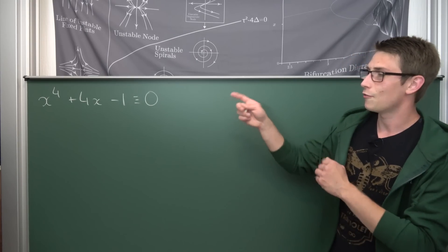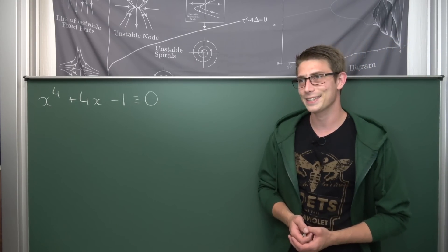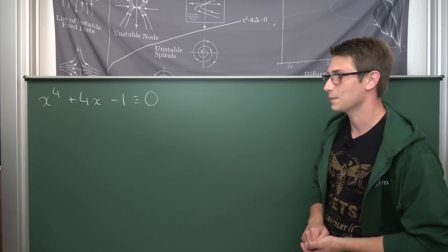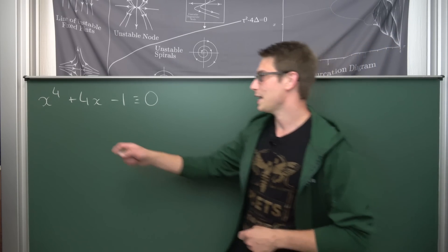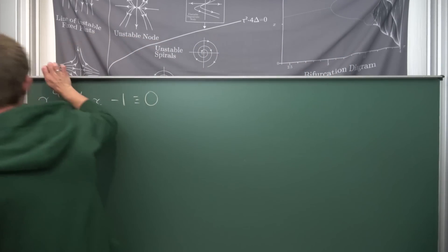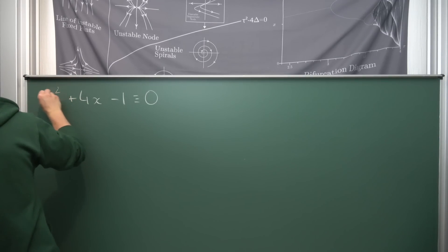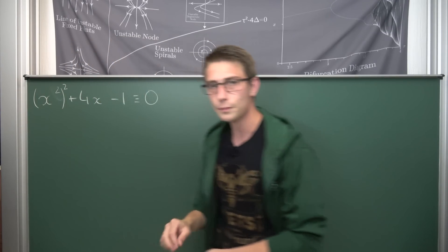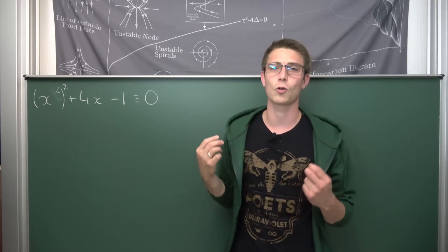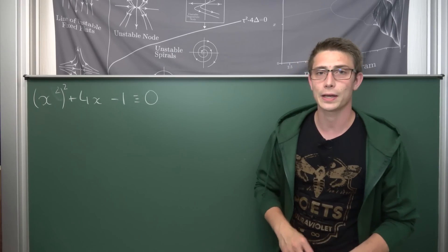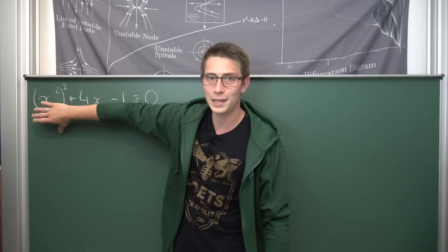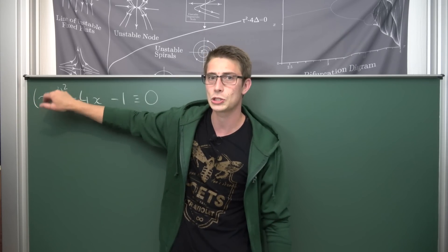We are going to start to factor this polynomial, and it actually involves some very nice rewriting of the original expression. First, I want you to notice that x to the fourth power is nothing other than x squared, but to the second power. Let's rewrite it like this — it's going to become important in just a minute. Now, if you have a term which is squared, this screams for completing the square in some way. Let's ignore the other parts for now and focus on completing the square on (x²)².